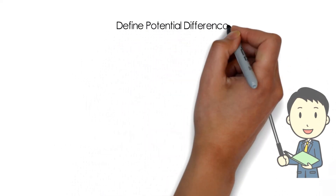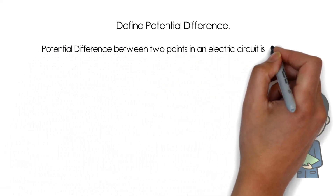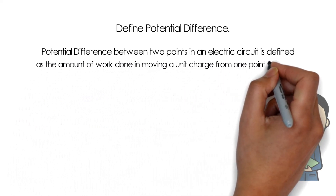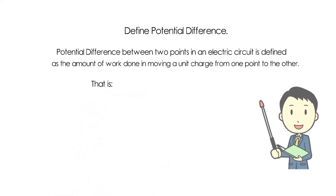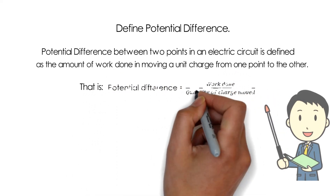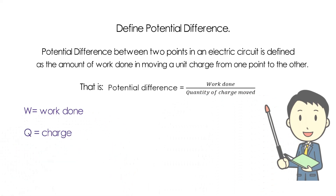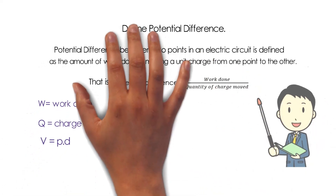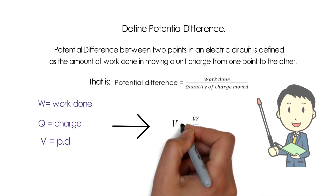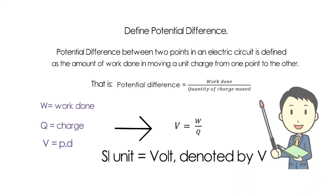Finally, let us define potential difference. The potential difference between two points in an electric circuit is defined as the amount of work done in moving a unit charge from one point to the other. Potential difference equals work done divided by quantity of charge moved. If W is the work done in moving a charge Q, then potential difference V equals W divided by Q, where V is potential difference, W is work done, and Q is the charge moved. The SI unit of potential difference is also volt, same as electric potential.